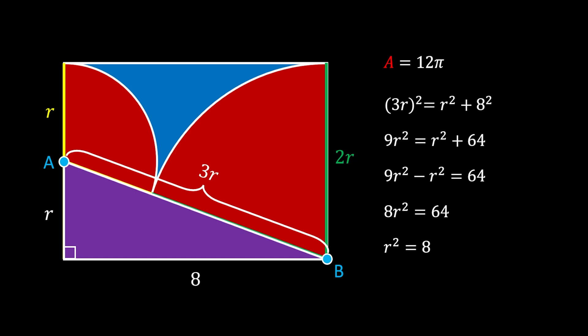Now we can continue and calculate the radius. Since r squared is equal to 8 that means that r is equal to square root of 8 which we can simplify and get that r is equal to 2 square root of 2.